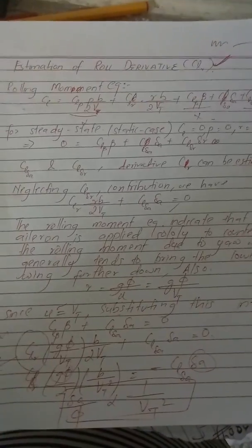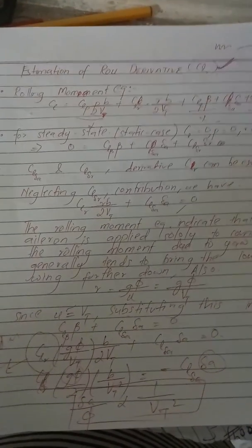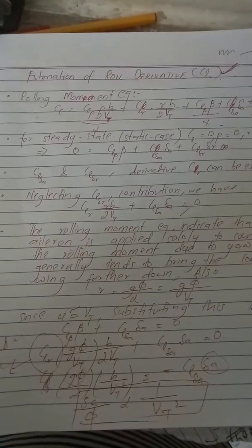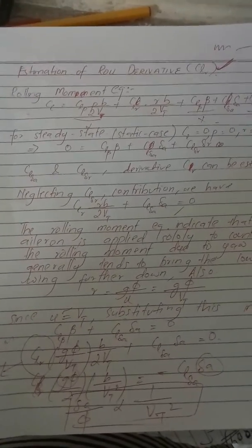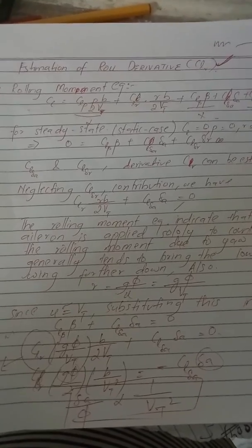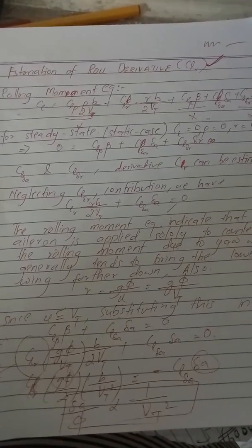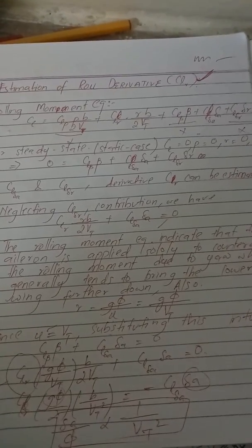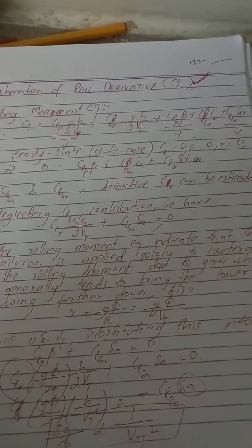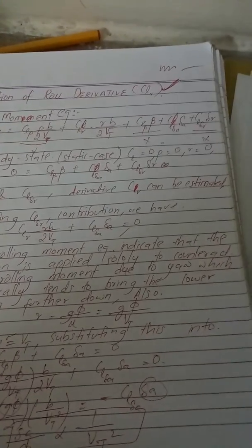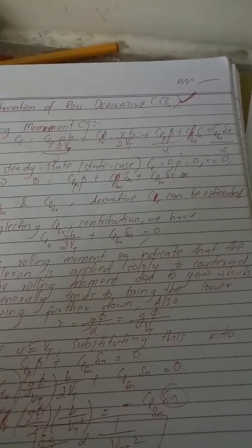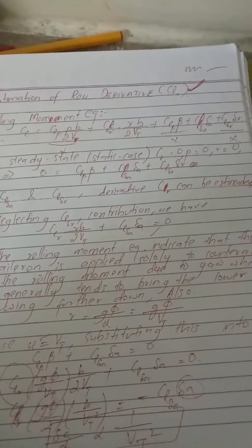With the help of the estimation of the roll derivative CLR, we are going to find out the rolling moment. The rolling moment equation is: CL equals CLP times (PB / 2VT), plus CLR times (RB / 2VT), plus CLβ times β, plus CLλA times λA, plus CLλR times λR. This is the primary equation for the rolling moment that governs the estimation of the roll derivative.